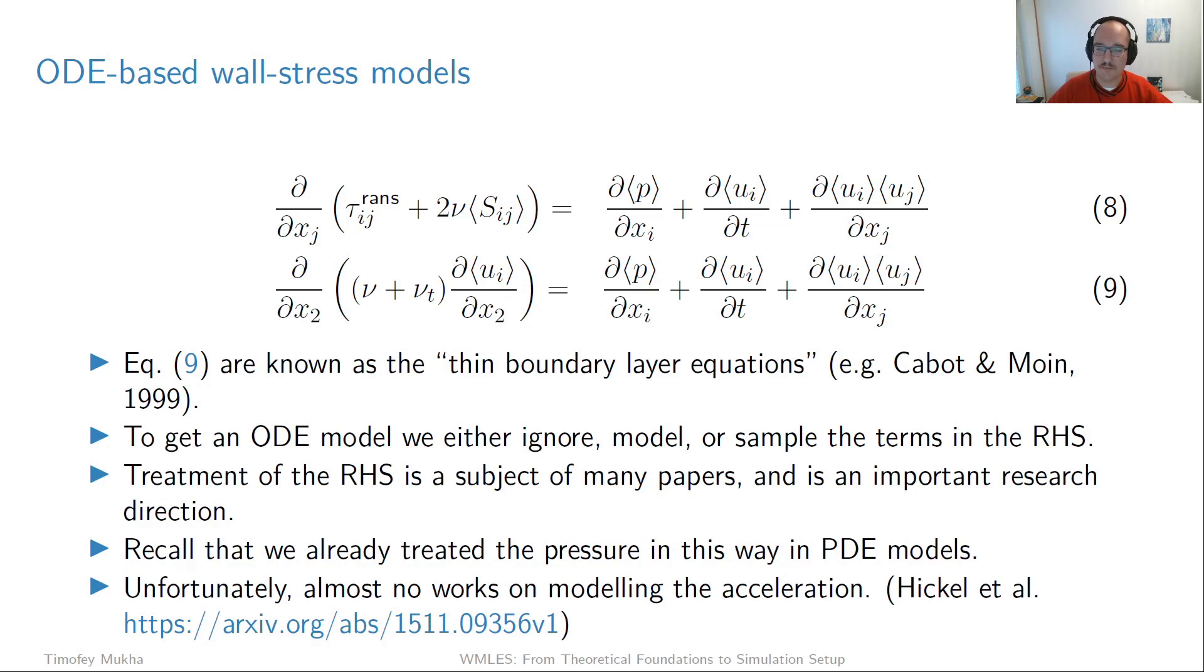The first step of simplification is that we take this viscous stress term and ignore the derivatives in the wall parallel directions, only leaving the d dx2 term. We also removed the RANS stress tensor and lumped it with the viscosity by using a turbulence viscosity approach.